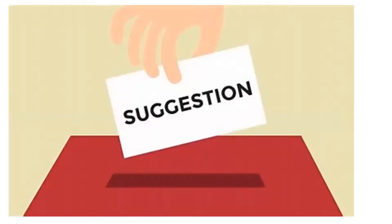The next term is suggestion. Suggestion, as defined by English and English in 1958, is a process by which one person, without argument, command or coercion, directly indicates another to act in a given way, or accept a given belief, opinion, or plan of action. A simple explanation: you are sitting in an online class and I ask you to open your book — this is a suggestion given by me. My suggestion can affect your action; you may decide to follow it or not. Suggestion is a statement or opinion shared by one person that can affect another person.